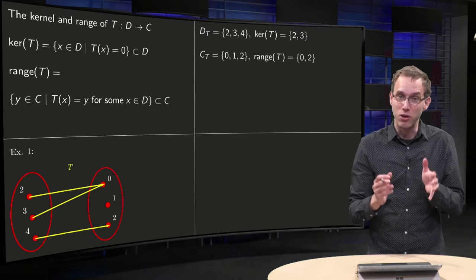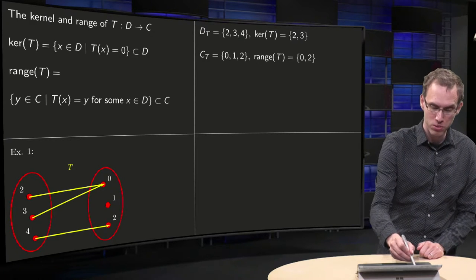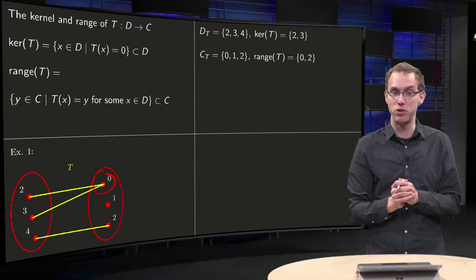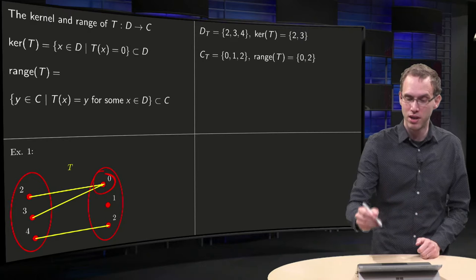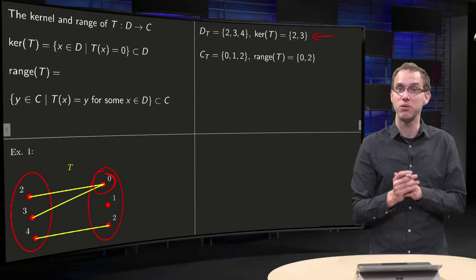What do we see? What is the kernel of our function? The set of all values that is mapped to 0. What function values are mapped to 0? 2 and 3. So in this case, the kernel of our function T will be the set consisting of 2 and 3.